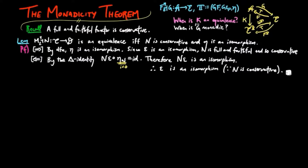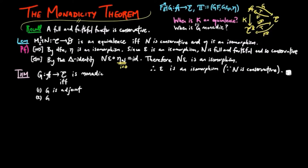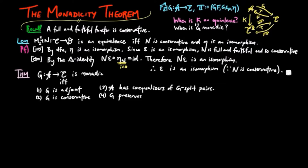We will now state and prove the monadicity theorem. A functor G is monadic if and only if: 1, G is adjoint; 2, G is conservative; 3, the category A has coequalizers of G-split pairs; and 4, G preserves coequalizers of G-split pairs.